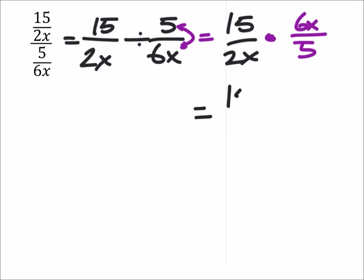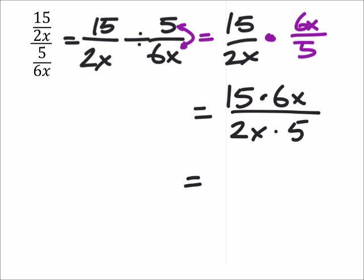So I can make that one full fraction. I've got 15 times 6x. Some of you would cross simplify and that would work too. And then 2x times 5. So if I multiply these, you get 90x over 10x.